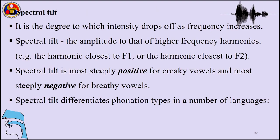Another important property when discussing phonation is spectral tilt — the degree to which intensity drops off as frequency increases. To quantify spectral tilt, we calculate the relative amplitude and compare it with that of higher frequency harmonics closest to F1 and F2. The spectral tilt is mostly positive for creaky vowels and steeply negative for breathy vowels. Spectral tilt also differentiates phonation types in a number of languages. Gujarati contrasts breathy and modal vowels; Kedang contrasts modal and breathy nasals.